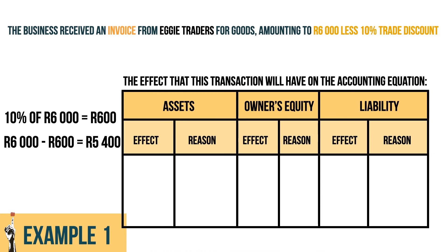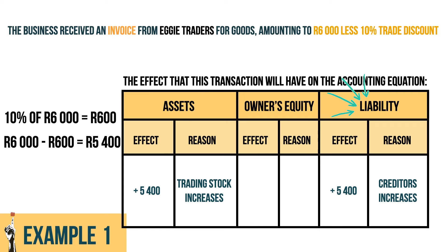Trading stock is a current asset for the business. When trading stock is purchased, the asset increases by the cost price amount. However, in this case the business does not pay cash for the trading stock because it is bought on credit from the creditor. The debt to the creditors is a current liability and thus increases the liabilities by the purchase price amount.